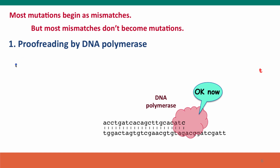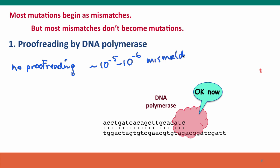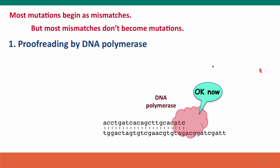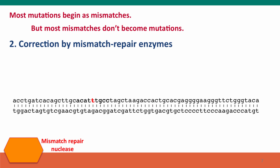In the absence of proofreading, the error rate is about 10⁻⁵ to 10⁻⁶ mismatches per base pair — that's about 1 in 10,000 to 1 in 100,000 base pairs is the wrong base. That's actually an extraordinarily accurate replication rate for a molecule, but it's not good enough. With proofreading, the error rate goes down to approximately 10⁻⁸, which is an astonishingly high fidelity rate. But it's still not good enough because our genome is so big.